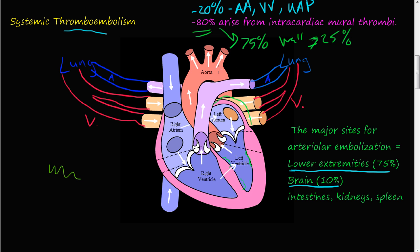Some embolisms take offshoots going cephalad towards the head, lodging inside the brain. The other sites are the intestines, the kidneys, and the spleen. So the arterial blood supply can be affected anywhere in the body, but the majority goes to the lower extremities, 10% to the brain, and a smaller portion to the intestines, kidneys, and spleen.